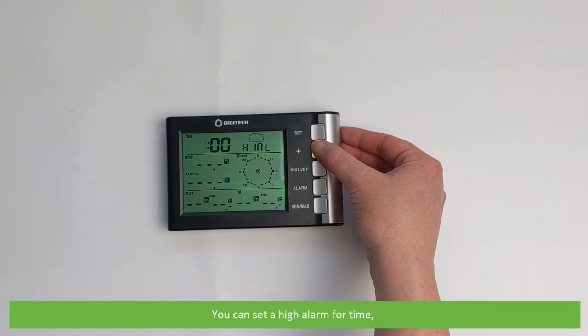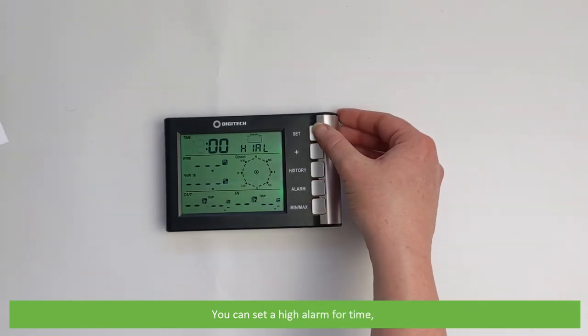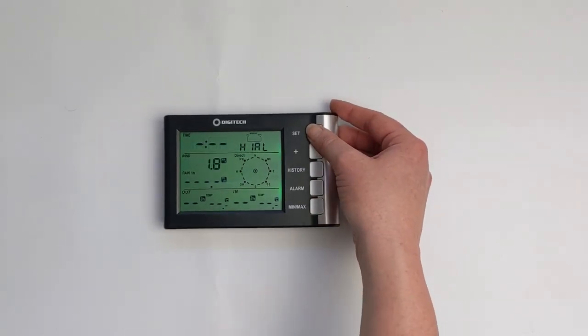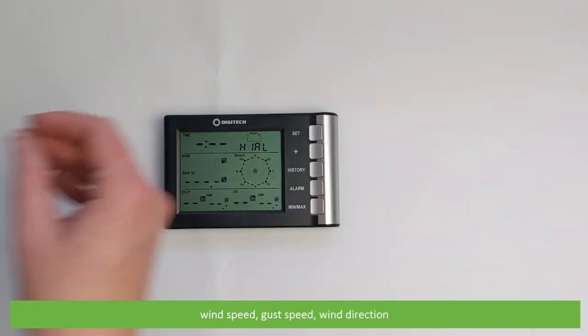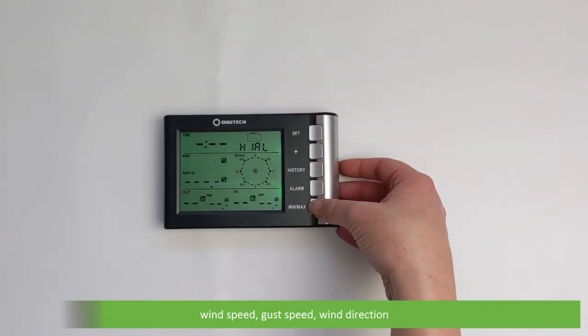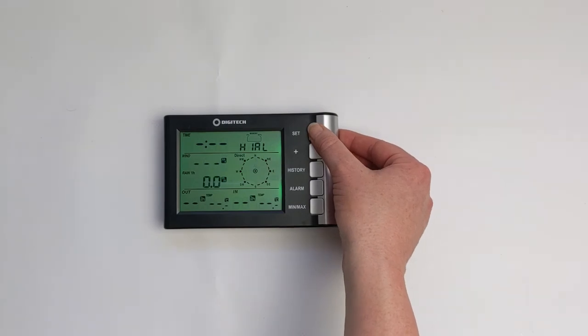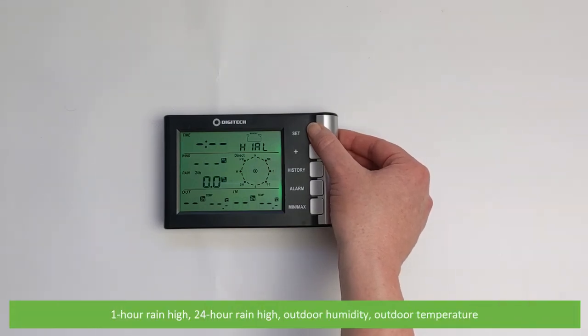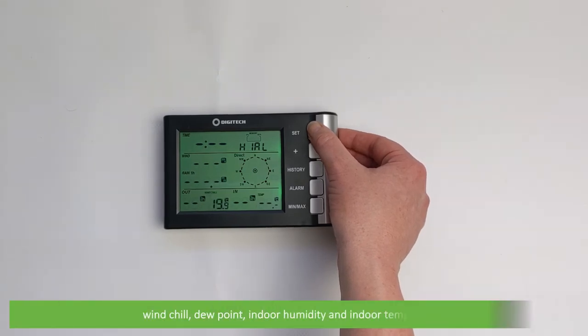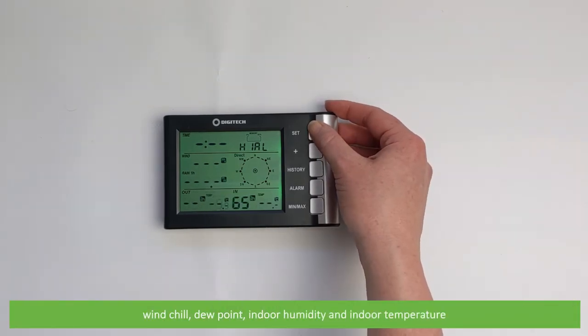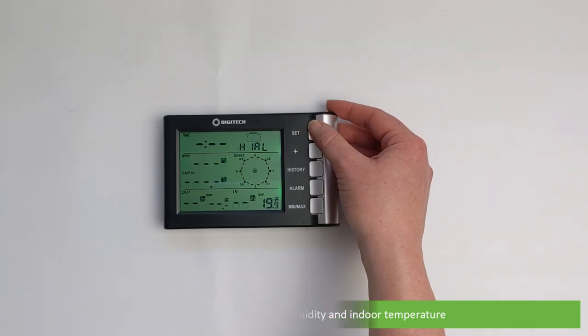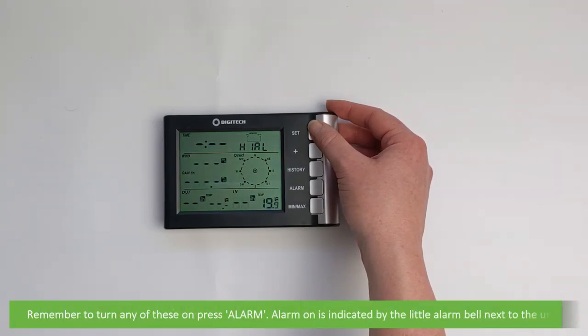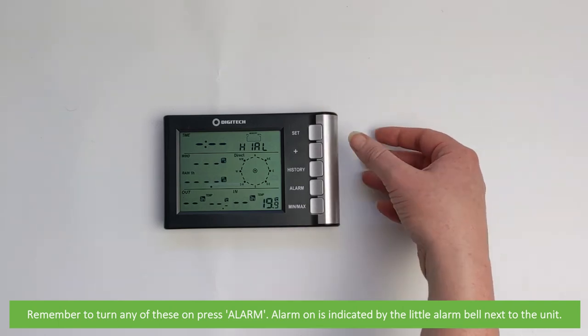You can set a high alarm for time, wind speed, gust speed, wind direction, one hour rain high, 24 hour rain high, outdoor humidity, outdoor temperature, wind chill, dew point, indoor humidity and indoor temperature. Remember to turn any of these on press alarm. Alarm on is indicated by the little alarm bell next to the unit.